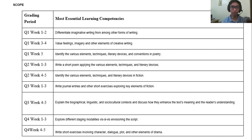For quarter two, week one to three: write a short poem using the various elements, techniques, and literary devices. For week four to five: identify the various elements, techniques, and literary devices in fiction. For quarter three, week one to three: write journal entries and other short exercises exploring key elements of fiction. For week four and five: explain the biographical, linguistic, and sociocultural context, and discuss how they enhance the text's meaning and the reader's understanding.